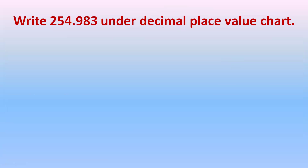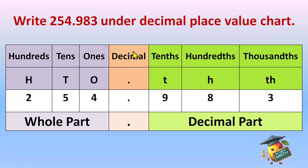Let's see an example: write 254.983 in the decimal place value chart. We say 254.983 — not 983. Let's make the decimal place value chart here. Before the decimal we have the whole part; after the decimal we have the decimal part. The place value chart has 100s, 10s, 1s before the decimal, and tenths, hundredths, thousandths after the decimal. So 9 comes under tenths, 8 under hundredths, and 3 under thousandths. This is how we write this number under the decimal place value chart.